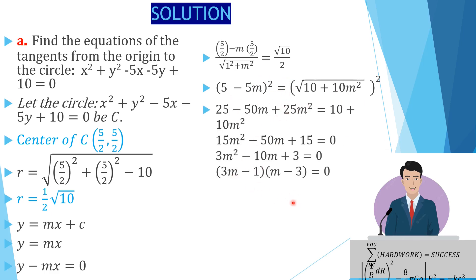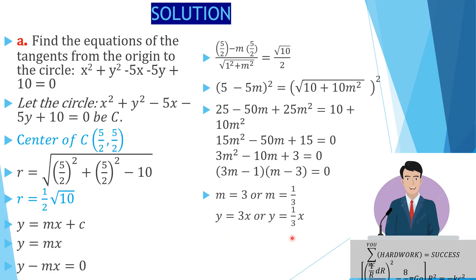Factorizing the quadratic gives two values: m = 3 or m = 1/3. So we have two possible equations for the tangent: y = 3x or y = (1/3)x. That completes Part A of the question.